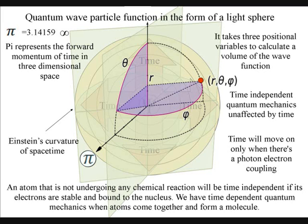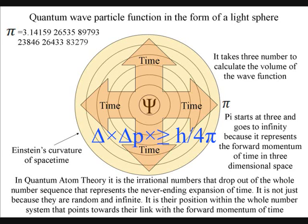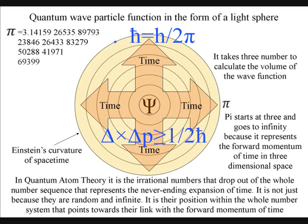We have Einstein's curvature of space-time because of the spherical shape of the quantum wave-particle function. This is why we have pi in the equation representing the shape of the wave-function in three-dimensional space-time. We also have pi in the equation for Heisenberg's uncertainty principle.